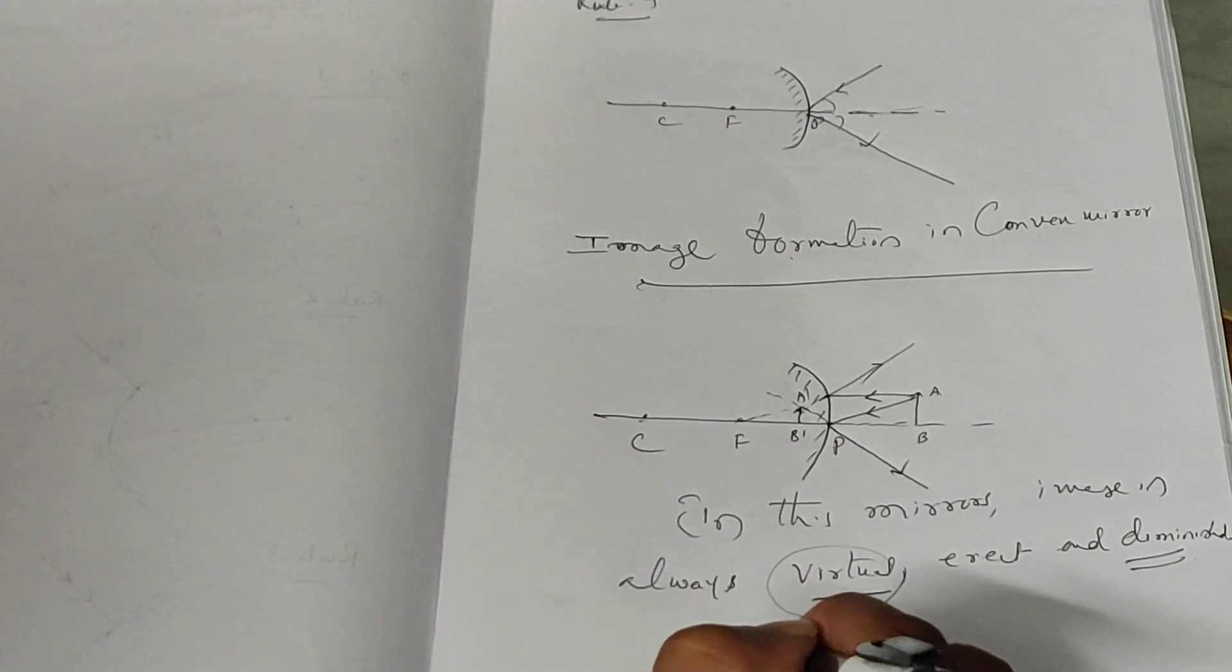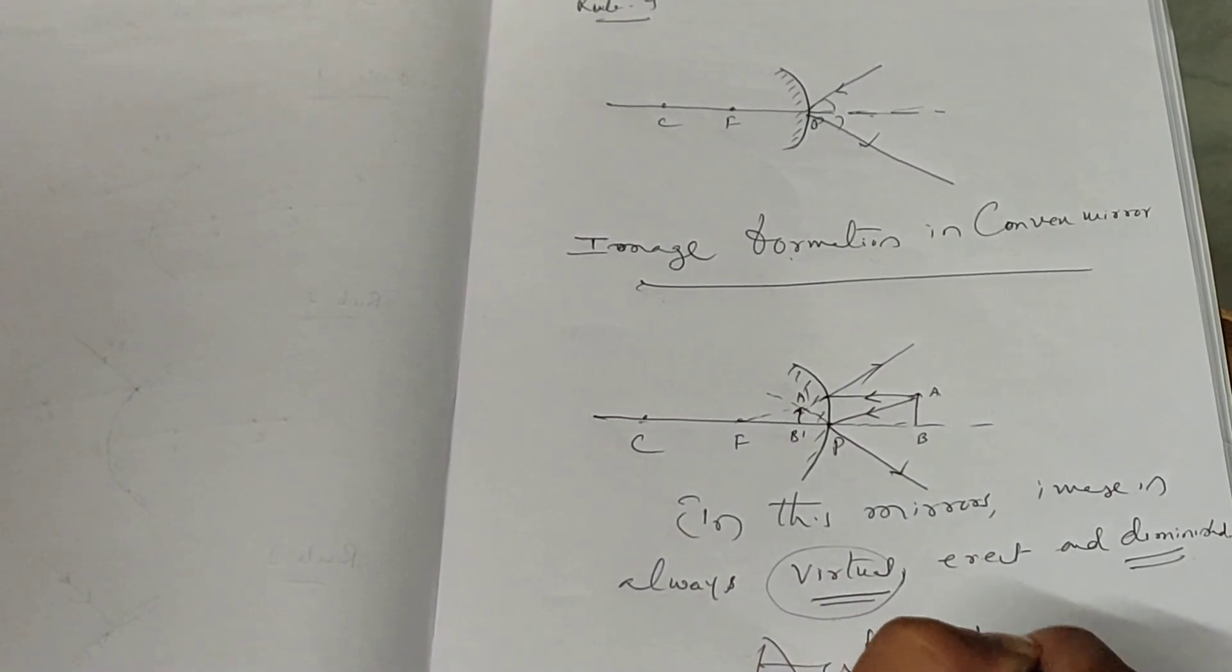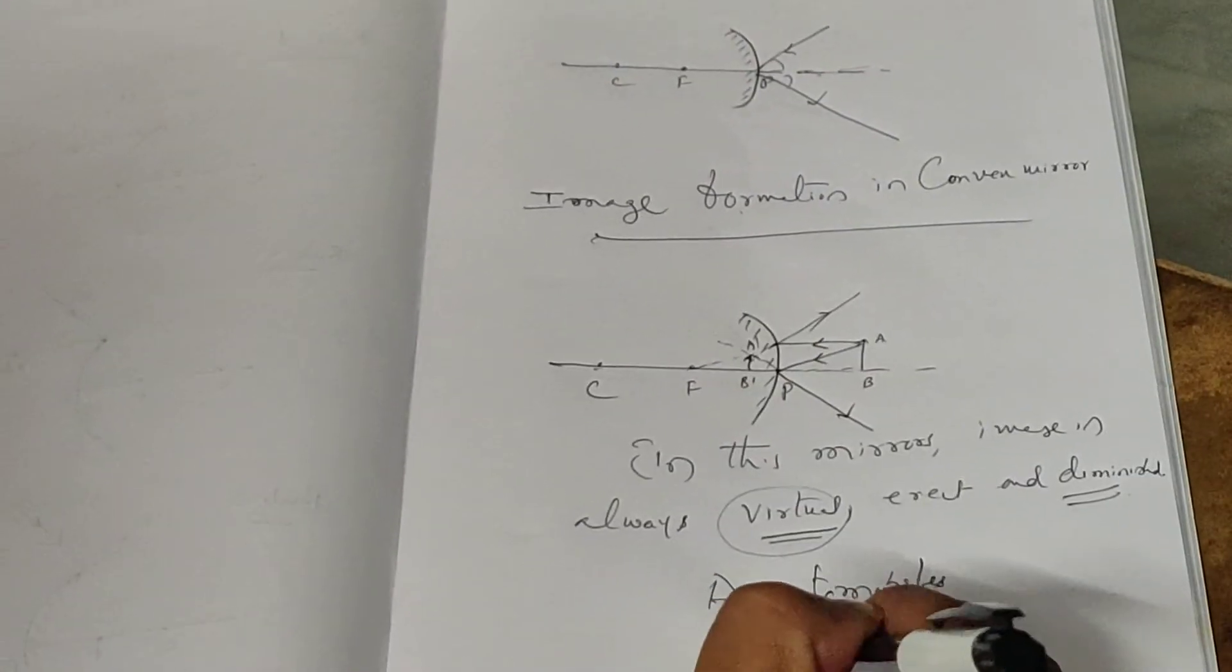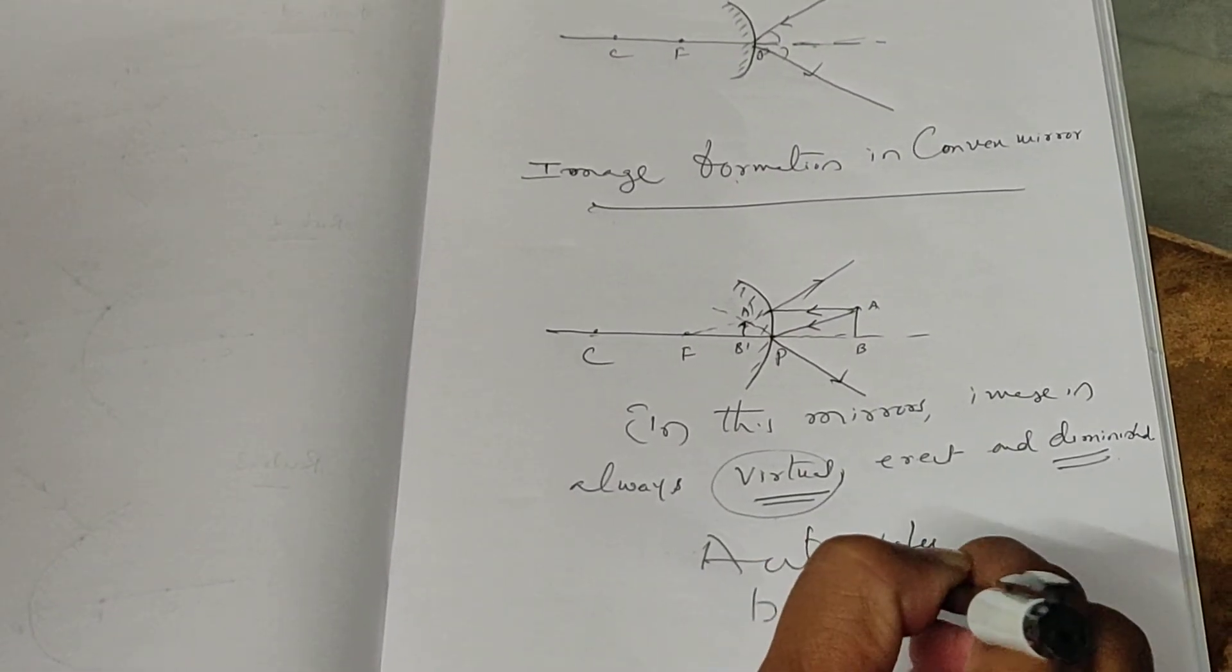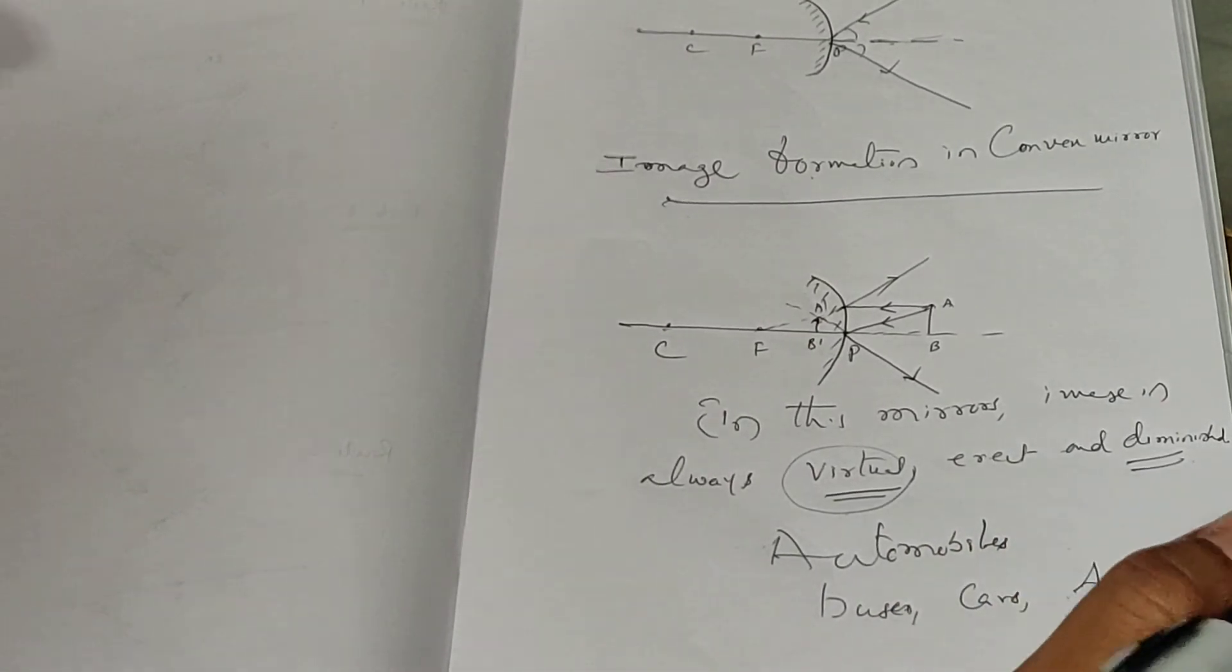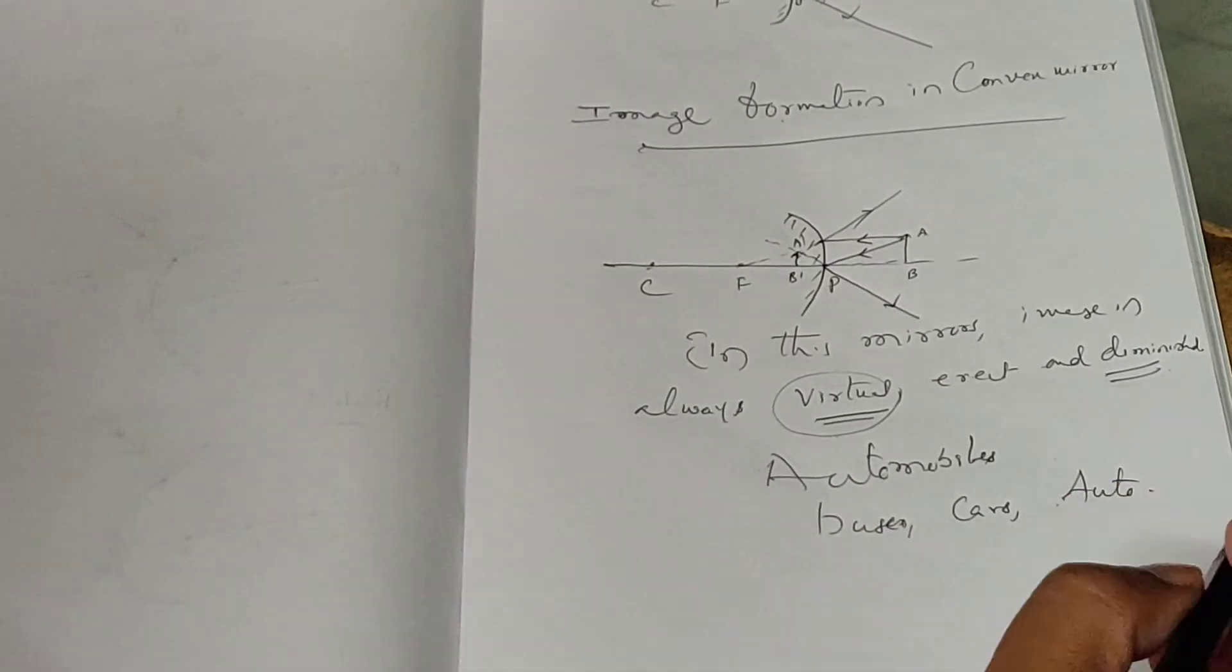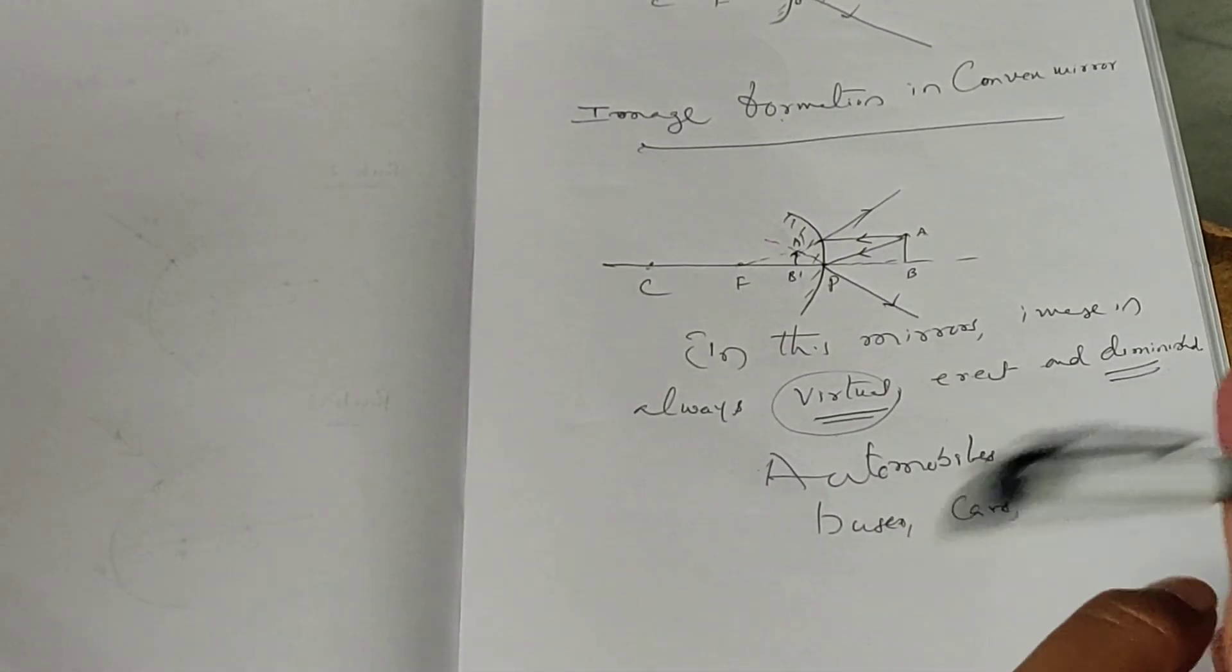Because of the diminishing region, this mirror finds application in automobiles. This mirror will be used mostly in automobiles, in buses, in front of buses or cars, and by auto drivers. This is about the application of convex mirror.